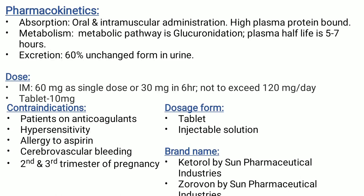Pharmacokinetics of ketorolac: absorption by oral and intramuscular administration; high plasma protein binding. Metabolic pathway is glucuronidation. Plasma half-life is 5–7 hours. Excretion in urine — 60% in unchanged form. Dosage: intramuscular 60 mg as single dose, or 30 mg every 6 hours twice; should not exceed 120 mg per day; tablet is 10 mg. Contraindications: patients on anticoagulants, hypersensitivity, allergic to aspirin, cerebrovascular bleeding, and in 2nd and 3rd trimester of pregnancy. Dosage form: tablet and injectable solution. Brand names: Ketorol and Toradol by Sun Pharmaceutical Industries.